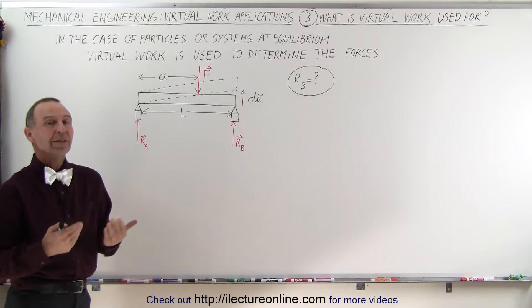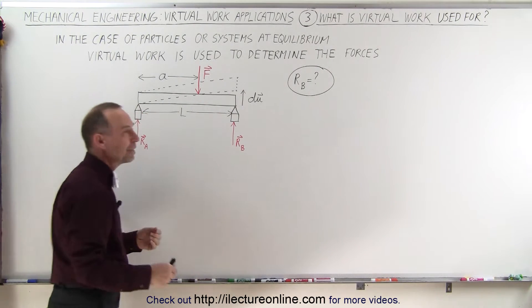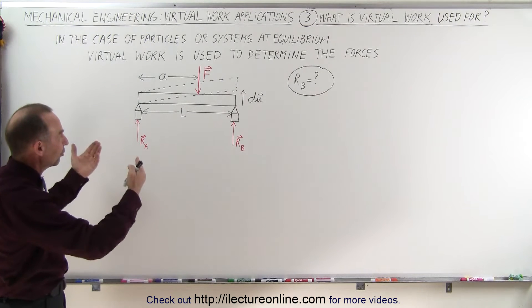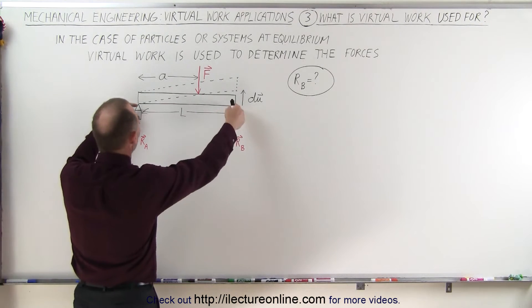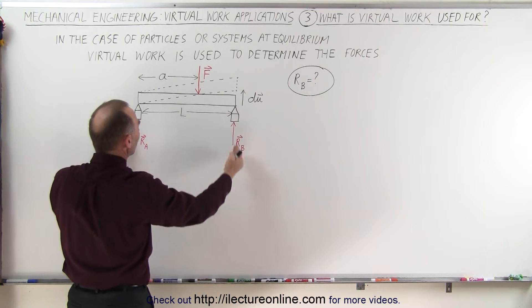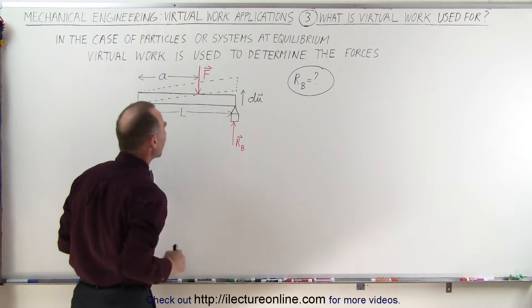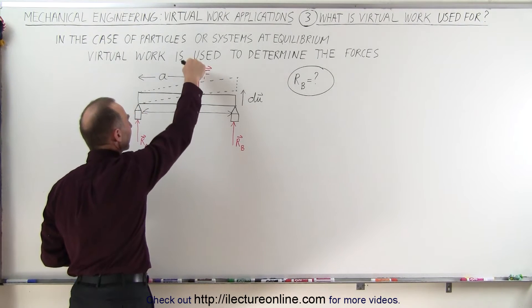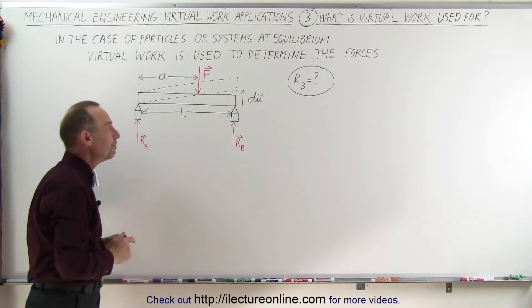So let's take a simple example. Let's say we have a beam, and let's assume that the mass of the beam can be ignored relative to the force acting on the beam. The length of the beam is L, and it's supported at A and at B. So we're going to have two reactionary forces, one at A and one at B. And there's a force applied on the beam, straight down, a distance A away from the left edge of the beam.